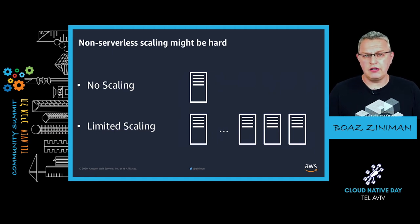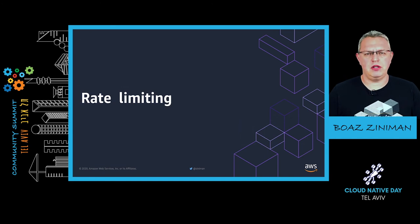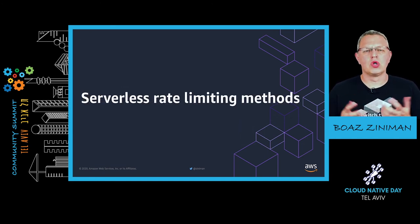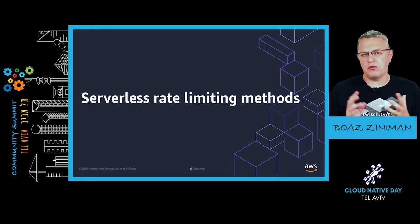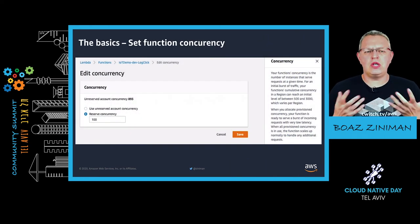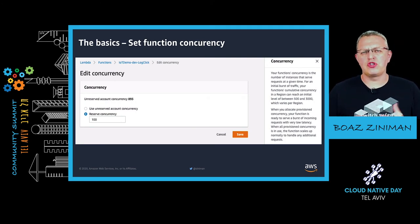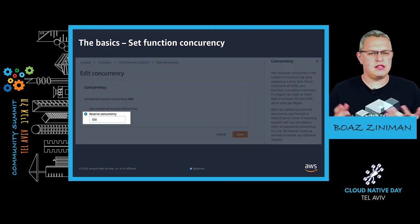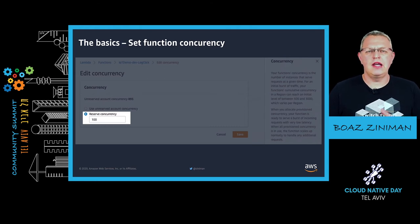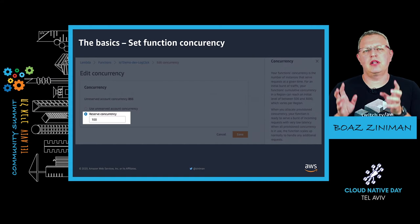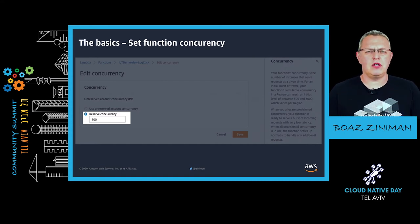To prevent that, we can and should use rate limiting. Specifically, I'd like to talk about rate limiting for your serverless applications. First, let's start with the basics: you can set function concurrency for each one of your functions. This will make sure your functions won't run above a certain number of invocations. In this case, I'm setting 100 invocations as my function concurrency. You can set it up in the console, the CLI, or your deployment tools.